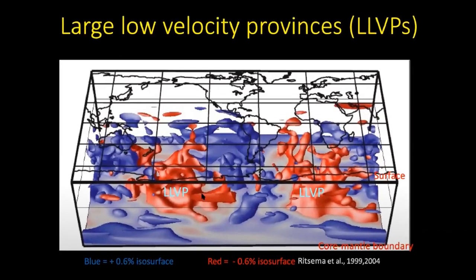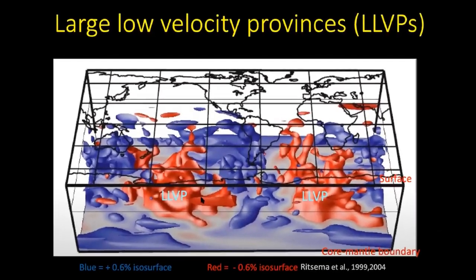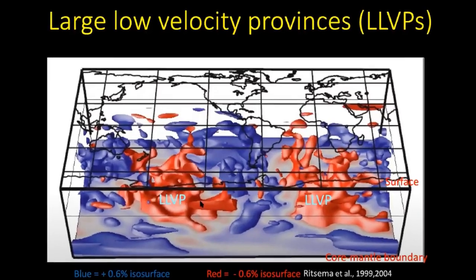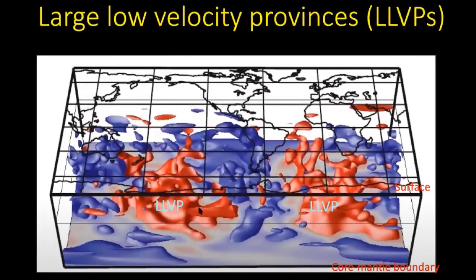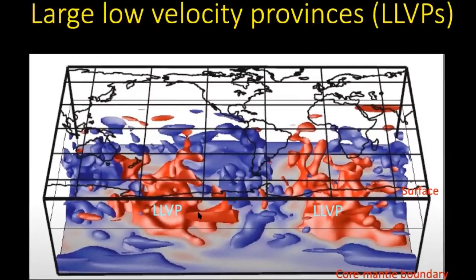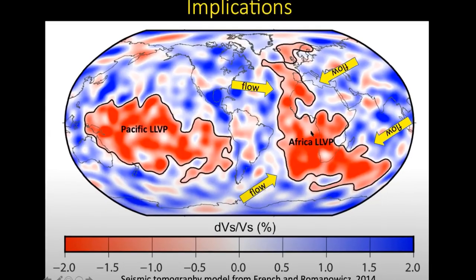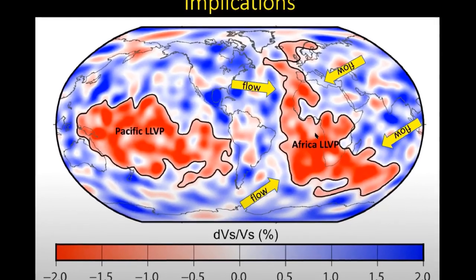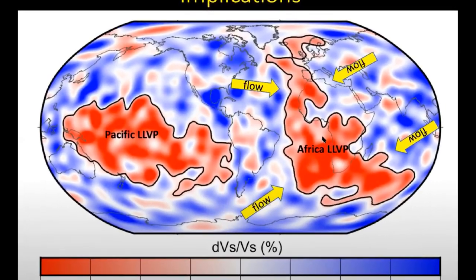According to researchers, the best explanation for the vast height difference between the two is that the blob under the African continent is less dense and therefore less stable than the one under the Pacific Ocean. Researchers designed and ran hundreds of mantle convection model simulations to conduct their research.